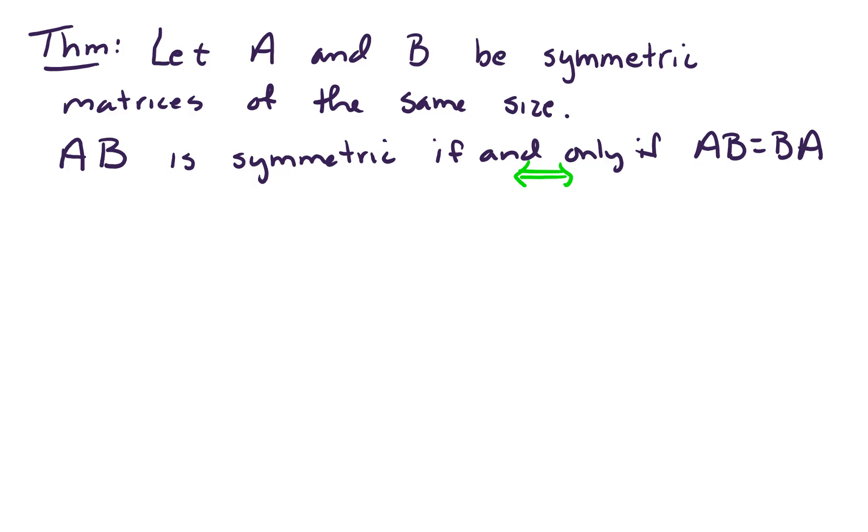So let's take a look at our proof. For this proof, we need to do a proof in two directions. So the first direction here, we need to assume that A times B is symmetric. So we'll assume this side and what we'll need to prove or what we need to show is that A times B equals B times A.